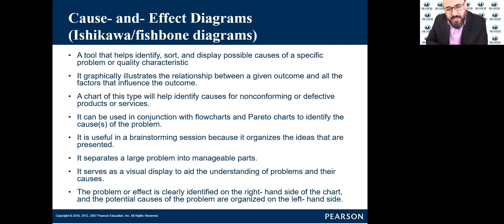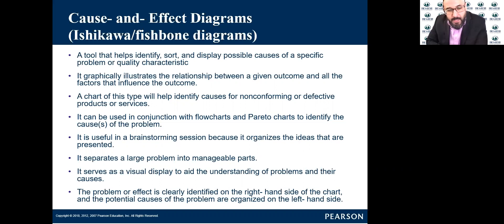It serves as a visual display to aid understanding of problems and their causes. The problem or effect is clearly identified on the right-hand side. When you look at the fishbone skeleton, on the right side — where the head of the fish is — this is where we put the problem. And the potential causes of the problem will be on the left side.